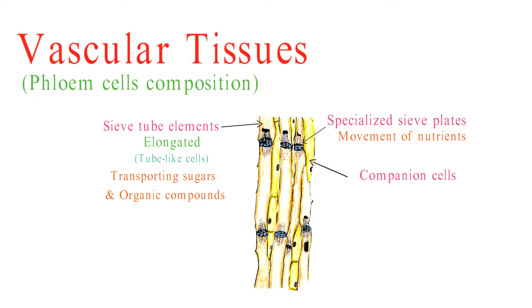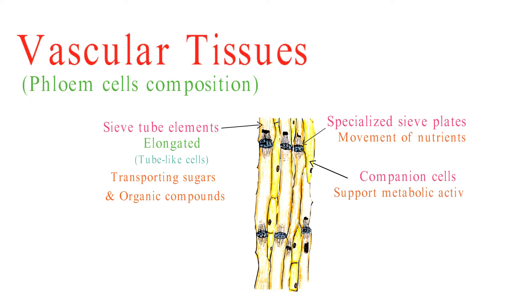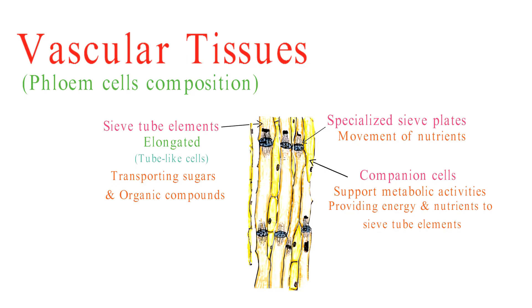Companion cells are closely associated with sieve tube elements and play a crucial role in supporting their metabolic activities. They maintain their nuclei and are responsible for providing energy and nutrients to the sieve tube elements, ensuring the efficient transport of sugars.